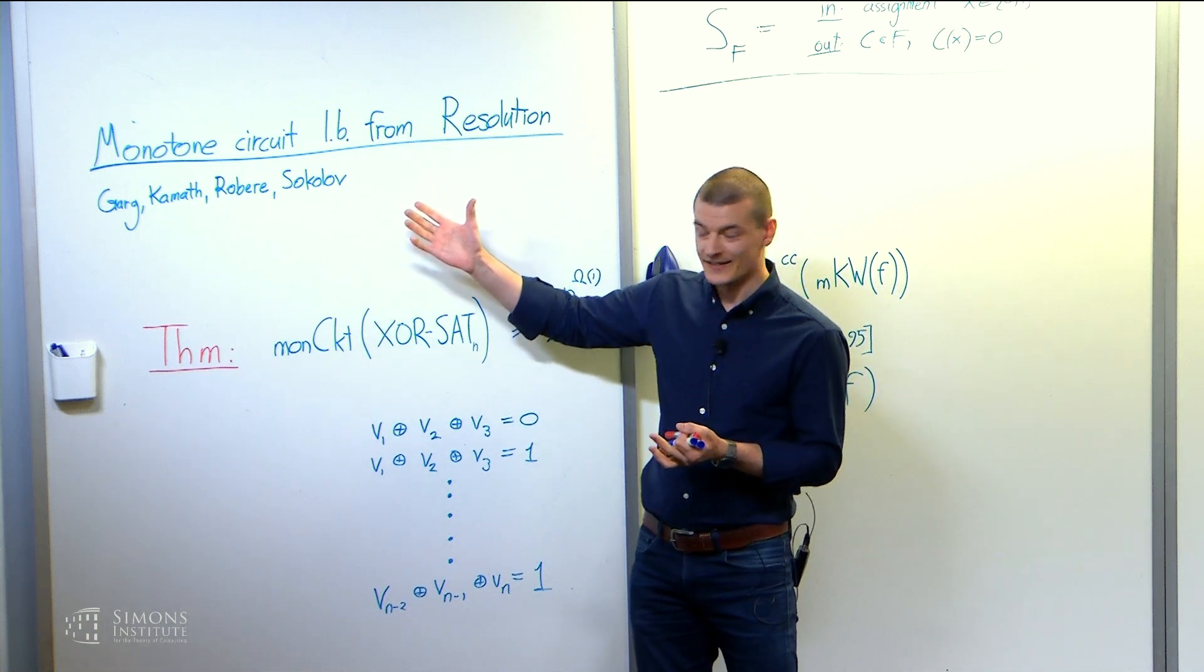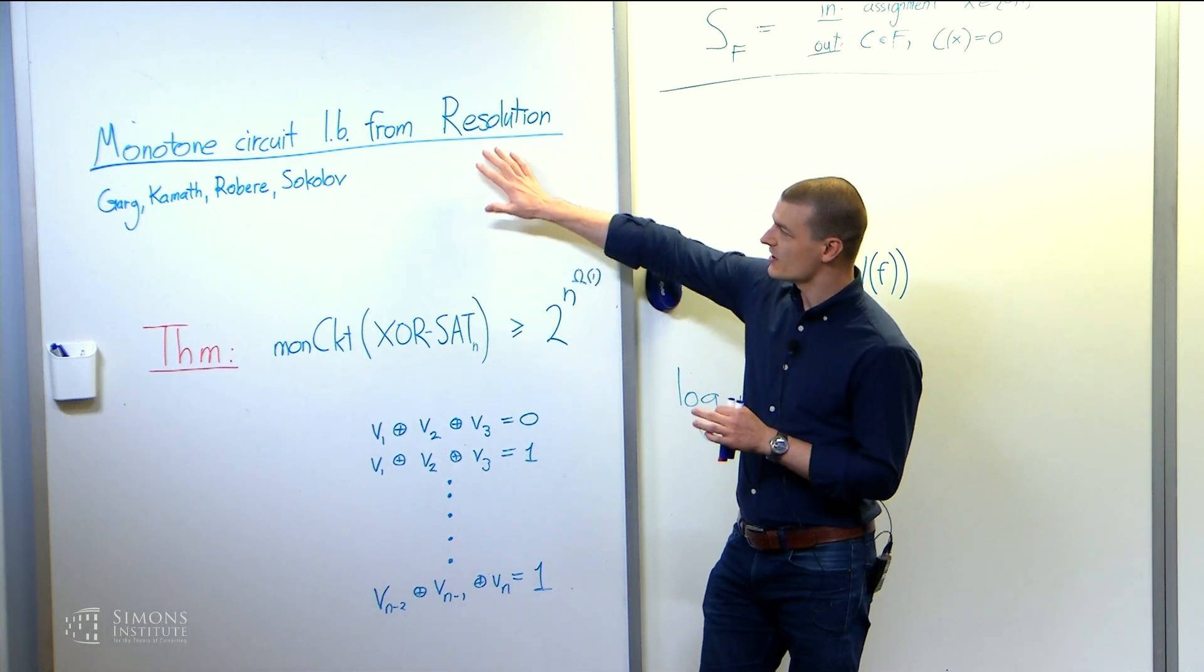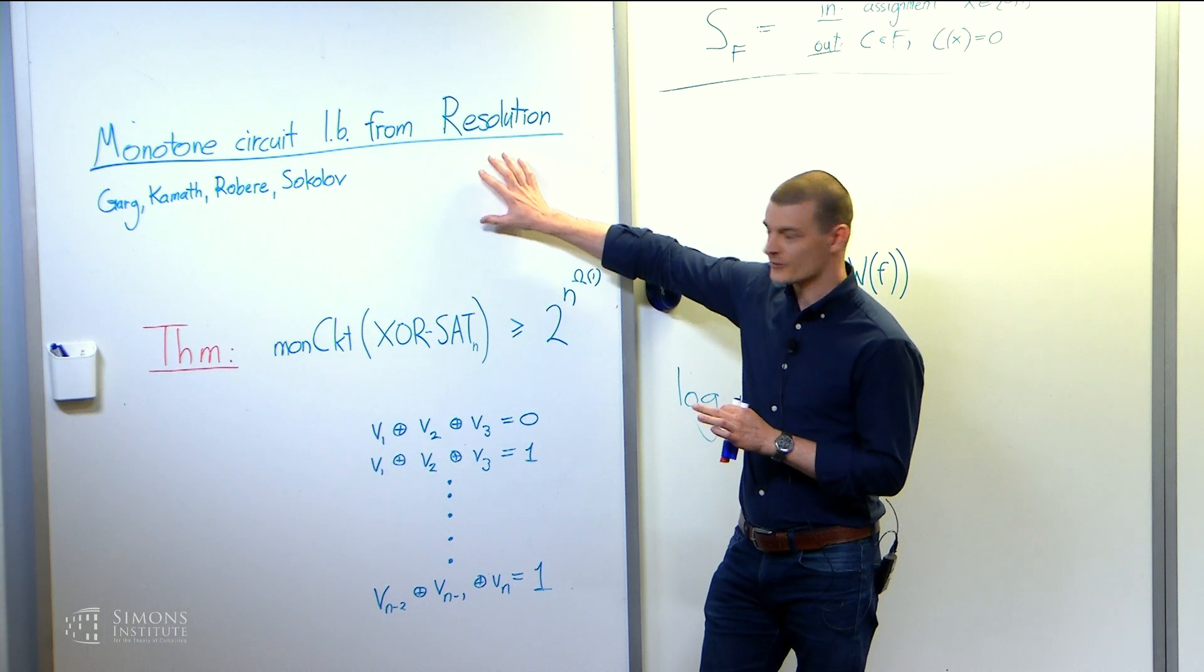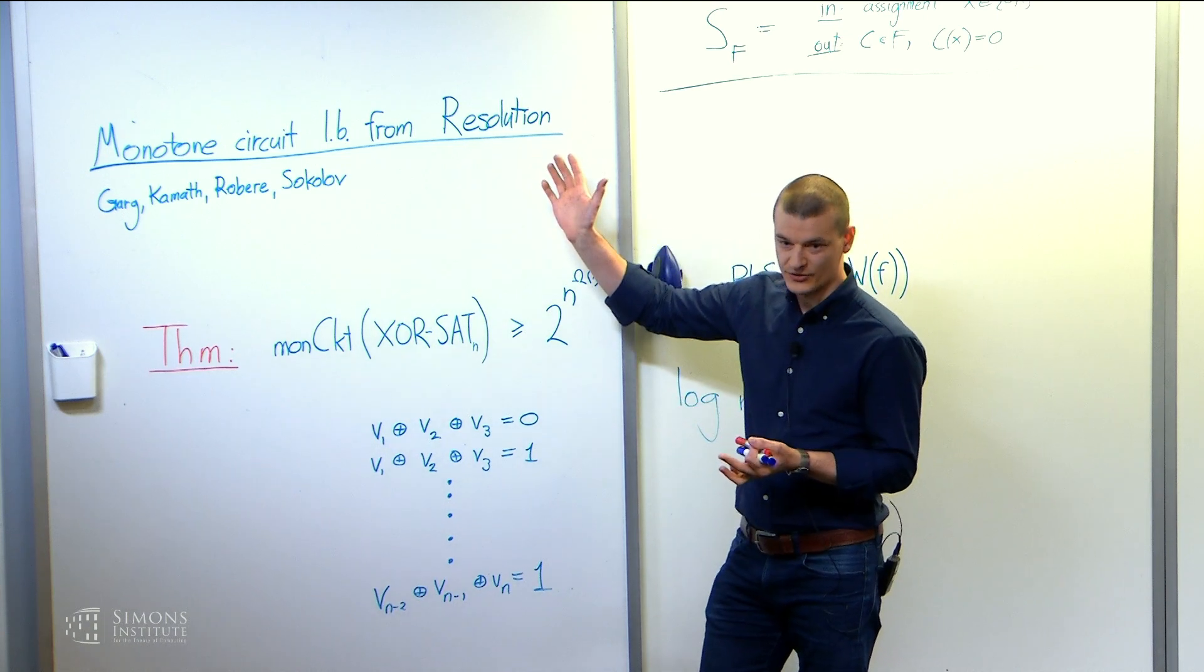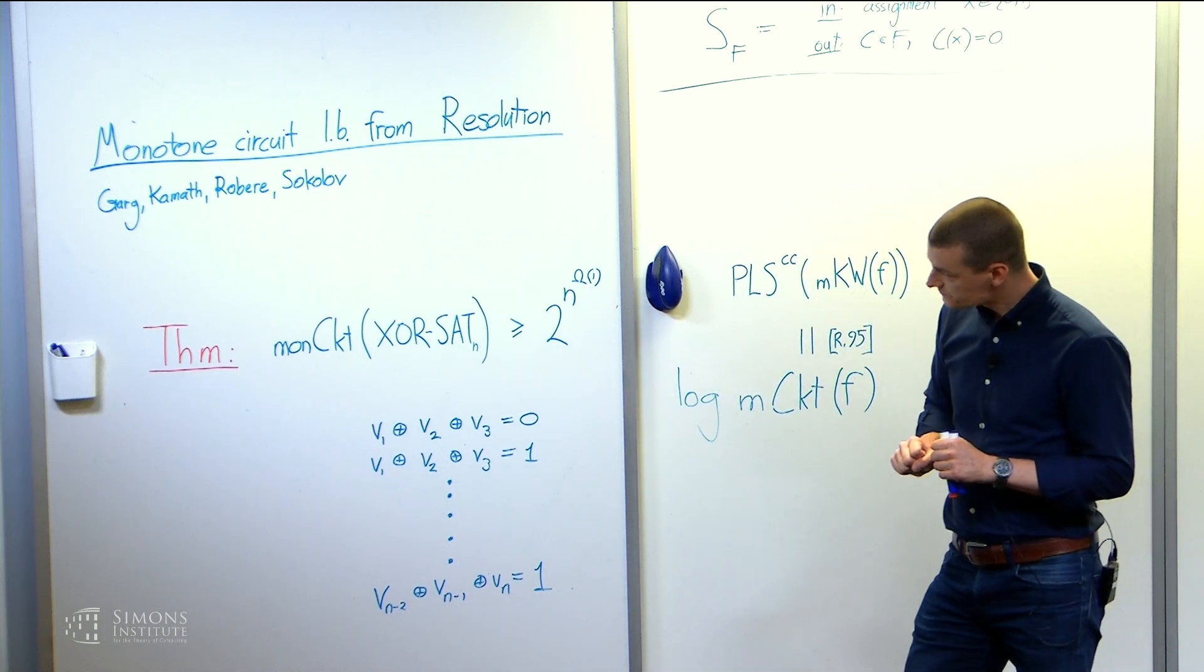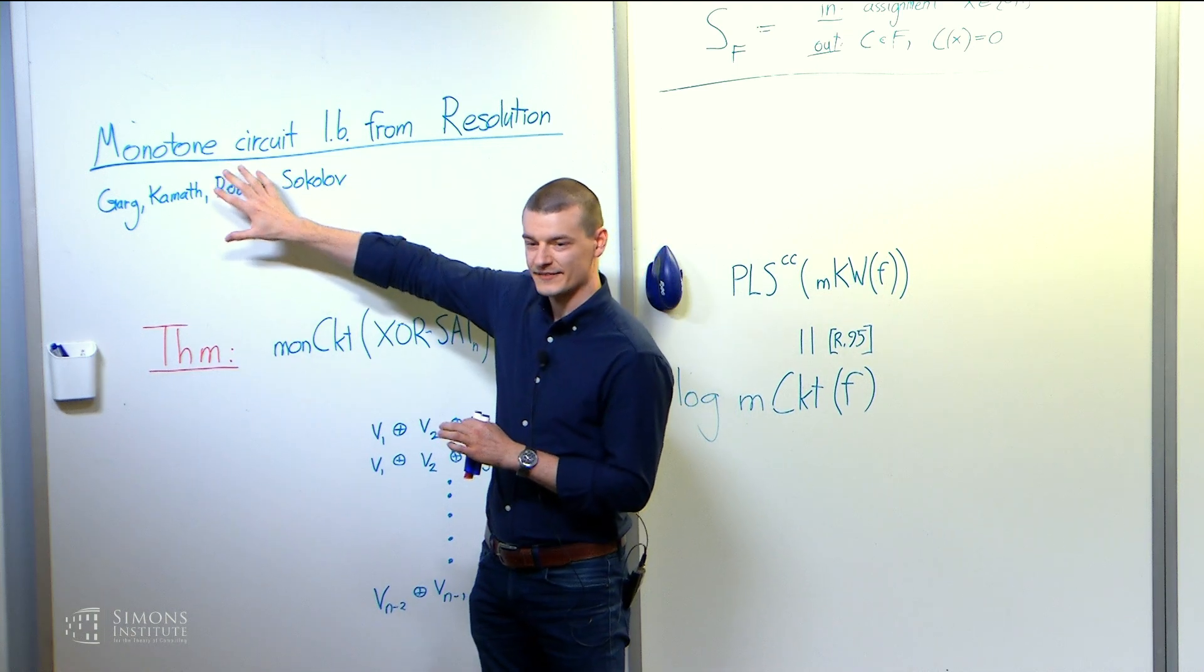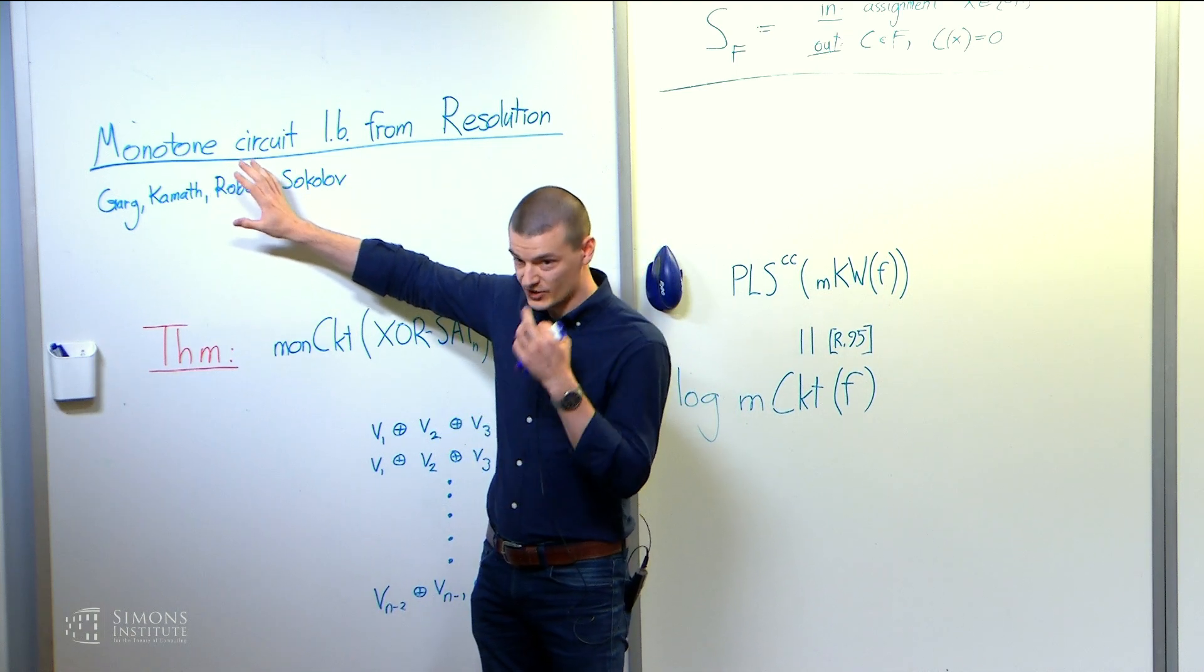The upshot of the whole work is, well, it's in the title. So it's machinery where you can start from lower bounds and prove complexity, resolution lower bounds. Normally, easy to prove, at least not terribly difficult. The machinery allows you to derive more or less as a black box, lower bounds in monotone circuit complexity.